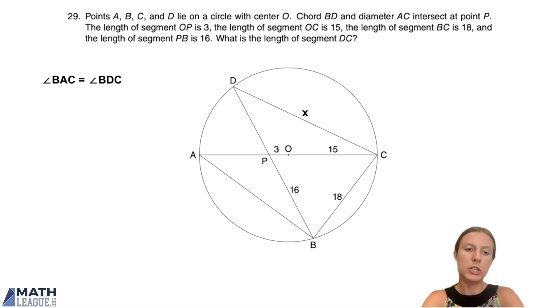Angle BAC and BDC are both opening on arc BC, and points A and D are both on the circle. So those are going to be the same angle, right? Same arc, same angle.